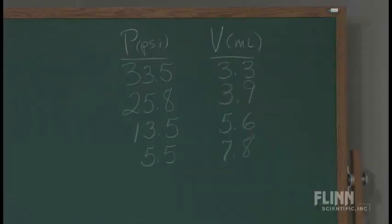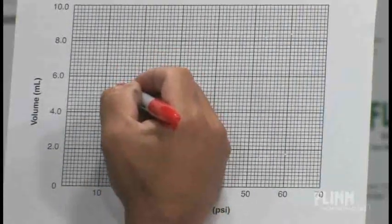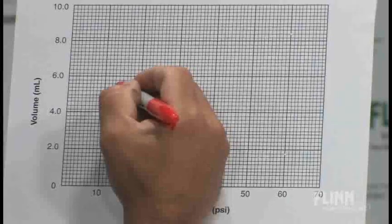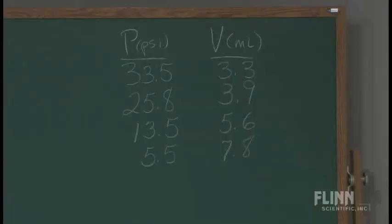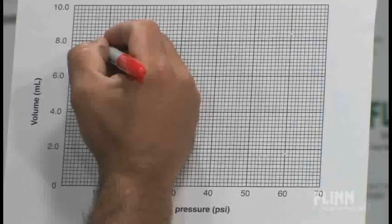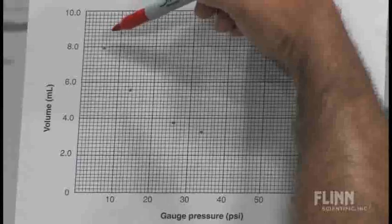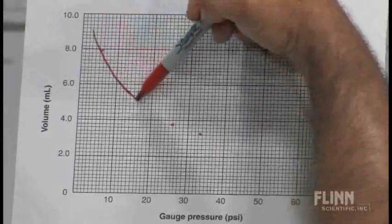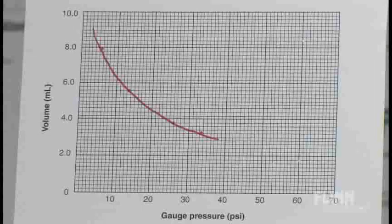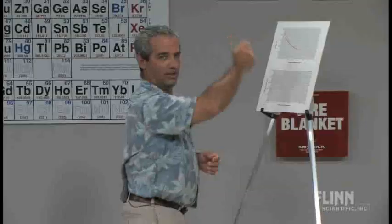Now we're at 13.5, that's right there, up to 5.6. And the final one: pressure of 5.5 and a volume of 7.8. The students can see from that what an inverse relationship looks like. I'm going to try to draw a nice smooth curve through that. It's not a linear relationship - that's what they would predict. It would be just the opposite of a direct, would be a straight line, but it's not.